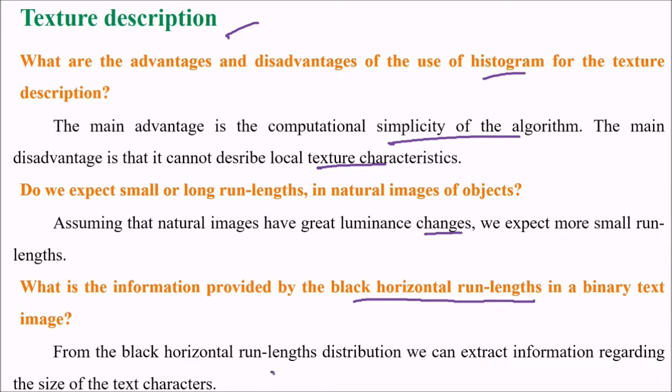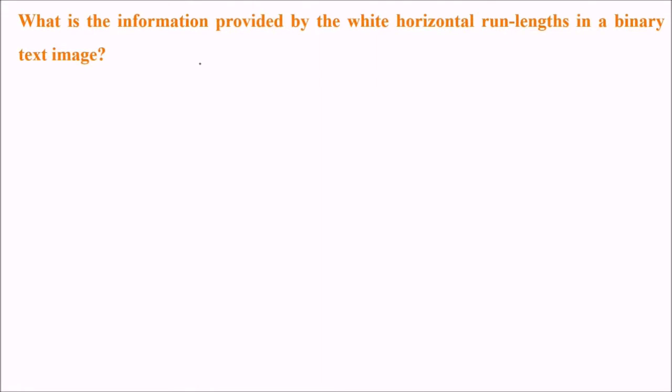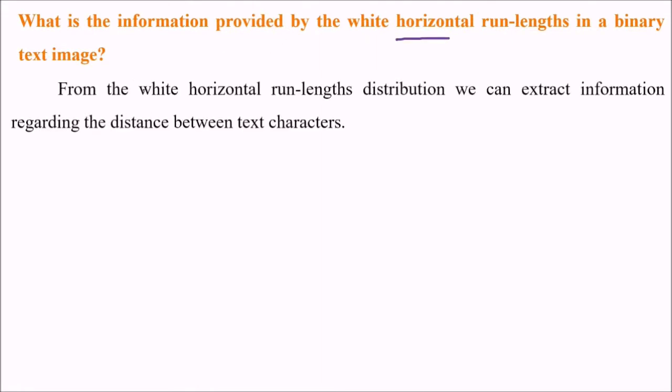What is the information provided by black horizontal run lengths in a binary text image? From the black horizontal run length distribution we can extract information regarding the size of the text characters. What is the information provided by the white horizontal run lengths in a binary text image? From the white horizontal run length distribution we can extract information regarding the distance between text characters.